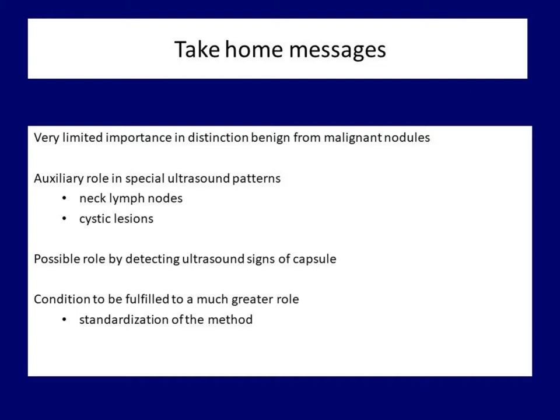The take-home message section is very thin. Although the absence of halo is in statistical terms one of the strongest suspicious characteristics suggesting thyroid cancer, we cannot rely on this sign because a great proportion of benign nodules also lack halo. There are certain situations where the detection of vascularity can be of help. It seems obvious to utilize the ability of ultrasound in the differential diagnostics of follicular tumors, but strangely we barely make use of this ability. There is considerable potential in the vascularization of thyroid nodules, but this would require the hitherto missing standardization of methodology. Thank you very much for your attention.